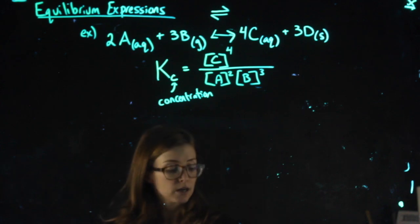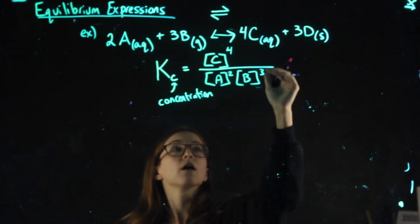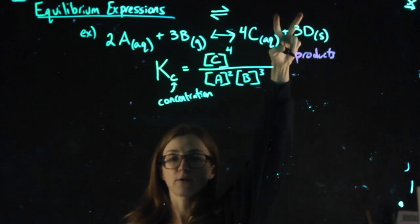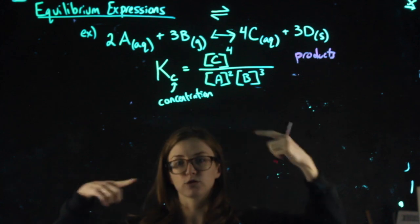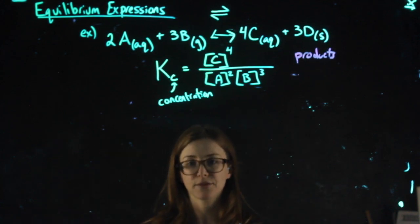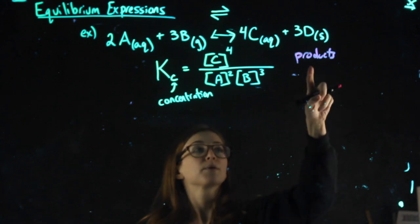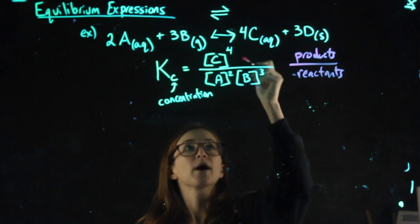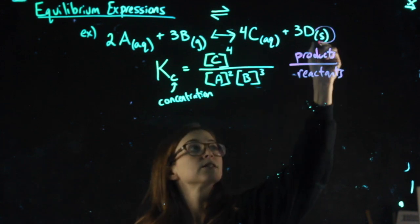Okay, so things you may have noticed. For the numerator, I put the products on top. Products on the right-hand side of the arrow. Regardless of which direction the reaction is happening at, we still call the left-hand side reactants and the right-hand side products. We put the products over the reactants. And some of you might be wondering, well, where is D? Well, D is a solid.